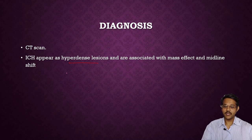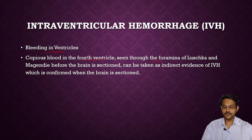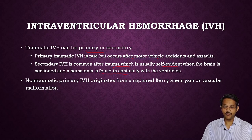Intraventricular hemorrhage is the next intra-axial hemorrhage type, where bleeding occurs in the ventricles of the brain. Copious blood in the fourth ventricle seen through the foramina of Luschka and Magendie before brain dissection can be taken as evidence of intraventricular hemorrhage. Traumatic IVH may be primary (rare, mainly in motor vehicle accidents and assaults) or secondary (common after trauma, self-evident when the brain is sectioned and hematoma is found contiguous with the ventricles). Non-traumatic primary IVH originates from ruptured aneurysms or vascular malformations.